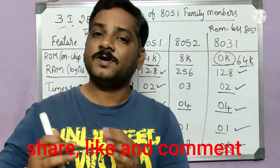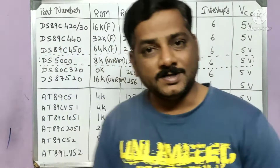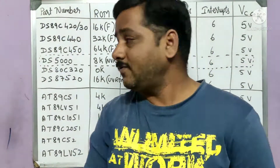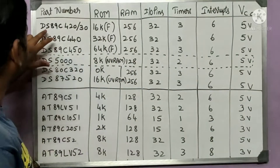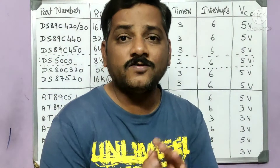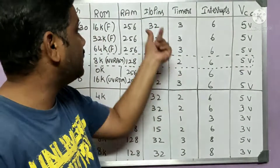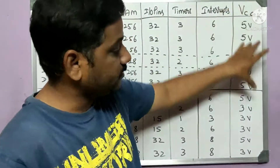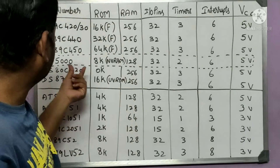Now let us look at different manufacturers — specifically different ICs from Atmel and Dallas Semiconductor. The first company is Dallas Semiconductor, where 'DS' stands for Dallas Semiconductor. They have developed microcontrollers in different series, such as the DS89C420 and DS89C430. Here 'C' stands for CMOS, which refers to the manufacturing technology. The table shows ROM, RAM, I/O pins, timers, interrupts, and operating voltage for each IC.